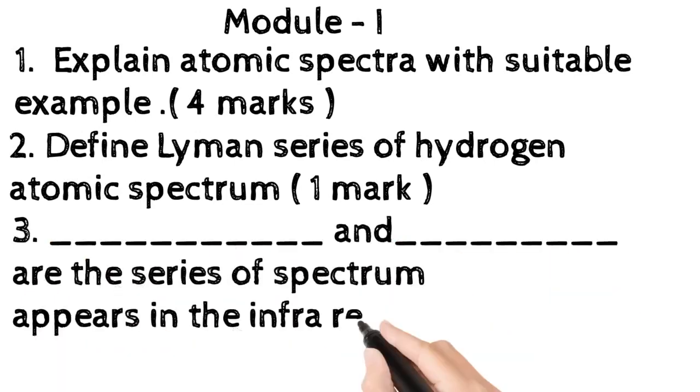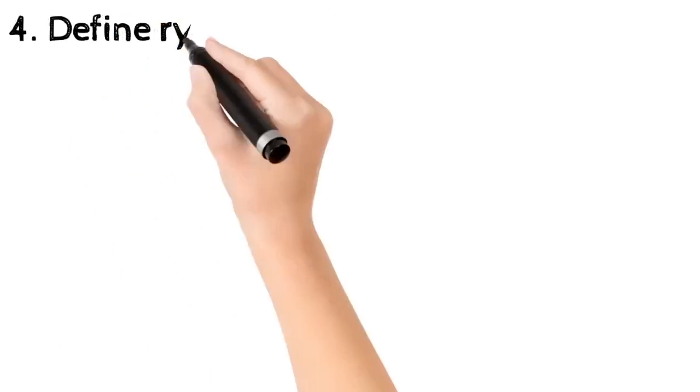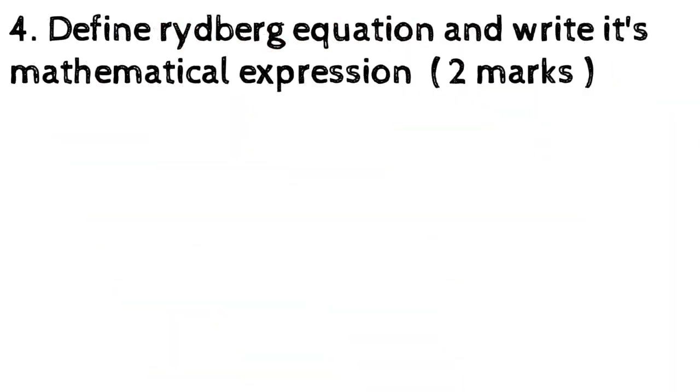Question 3: Blank and blank are the series of spectrum which appears in the infrared region, 1 mark. Question 4: Define Rydberg equation and write its mathematical expression, 2 marks.